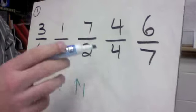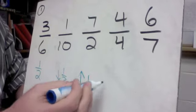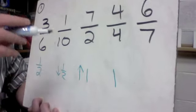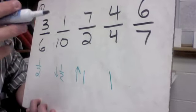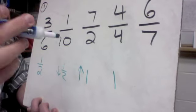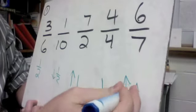4/4, if I have four out of four, I've got everything. So that would be one whole exactly. And then 6/7, I would just need one more seventh to get to 7/7, which would be one whole. So it's really close to a whole. So I'll label this one as more than half.